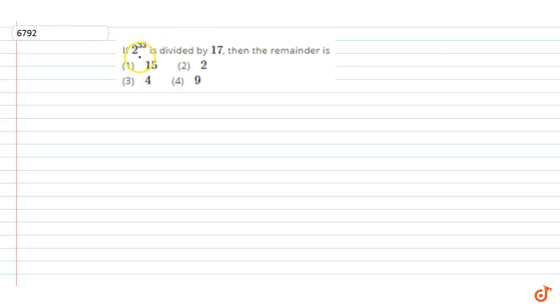In this question, if 2 to the power 33 is divided by 17, then the remainder is which of the following?